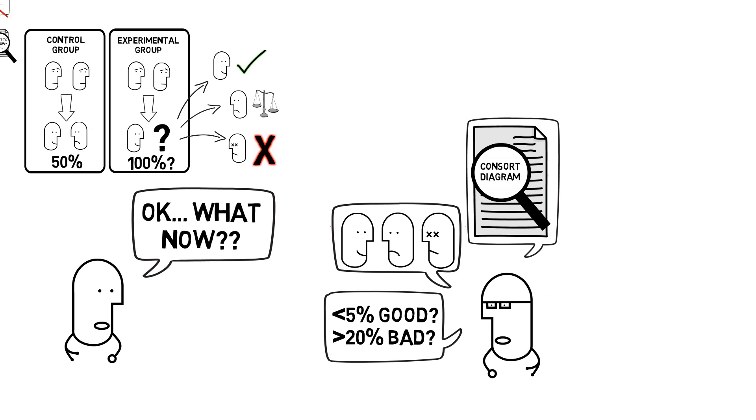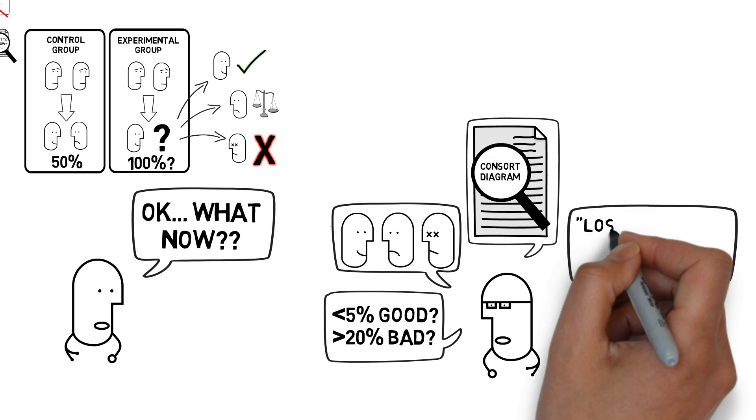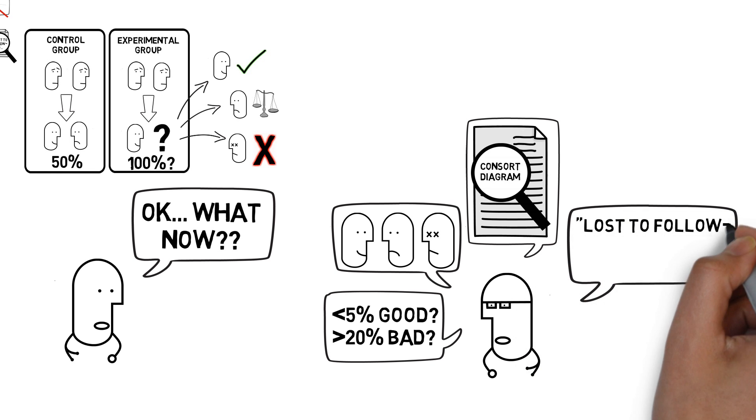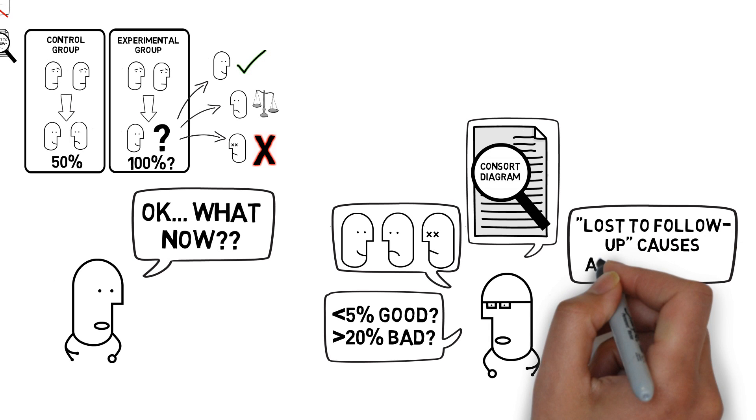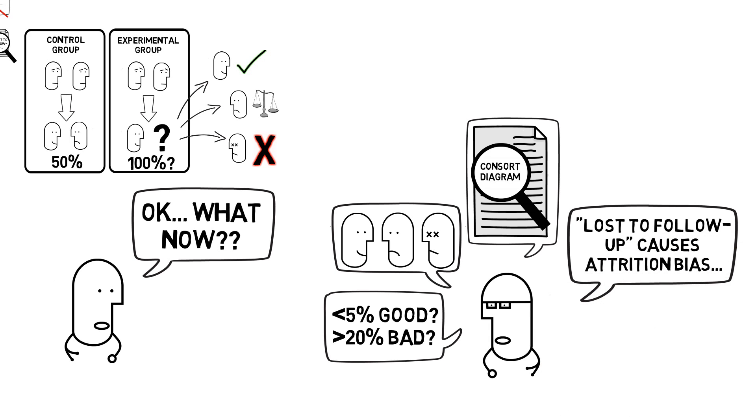The overall effect of participants being lost to follow-up leads to something called attrition bias. Attrition bias occurs when you've got non-random loss to follow-up in one group or another. I've got a sketchy EBM video on bias if it's a concept you're struggling with.